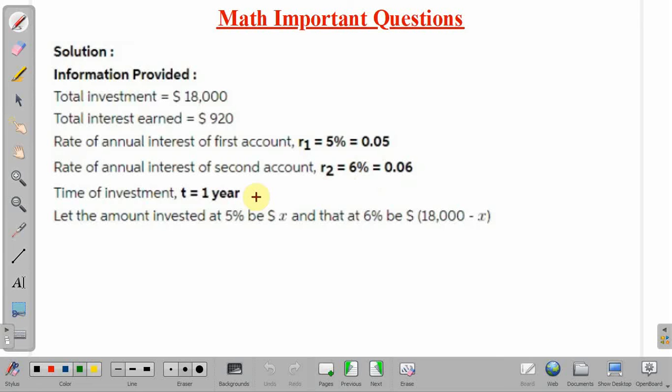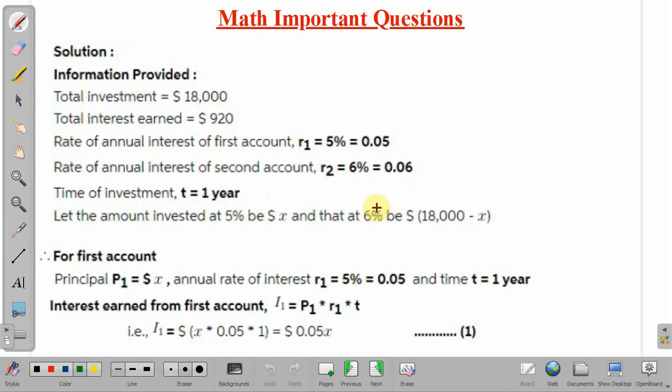We are assuming that the amount invested at 5% is $X, so the remaining $18,000 minus X will be invested at 6%. For the first account, we have principal amount P1 equal to $X, rate of interest is 5% or 0.05, and time period is 1 year.